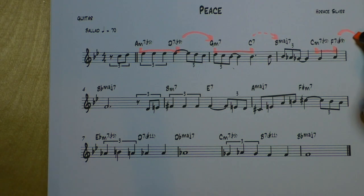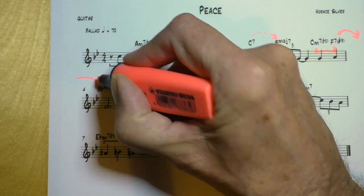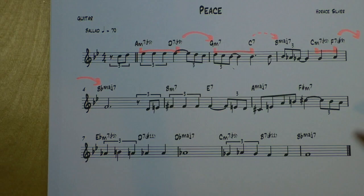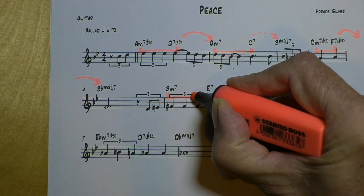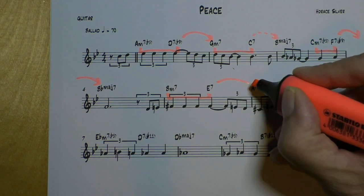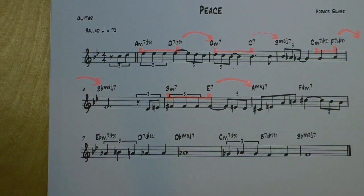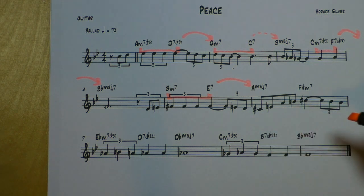2-5 in minor, but going to major. No relation to the next one, but this is a 2-5 going to the Amaj7. That's a 6 chord. We'll talk about that later.